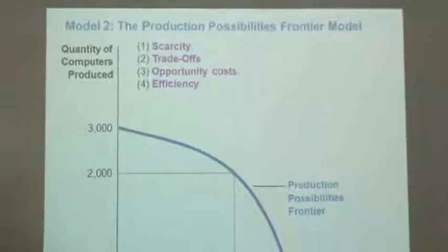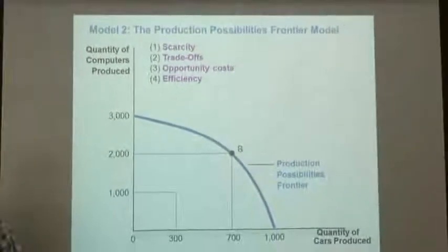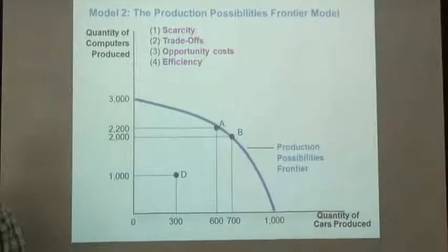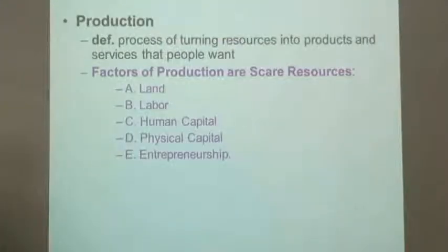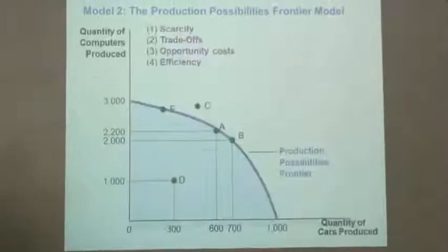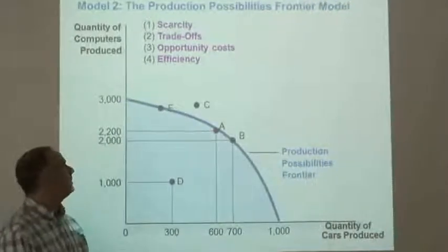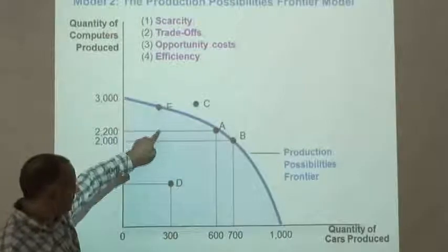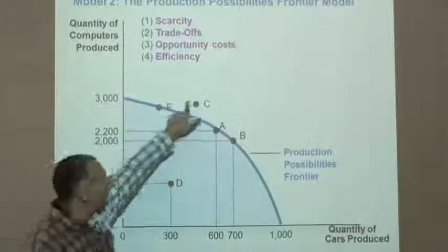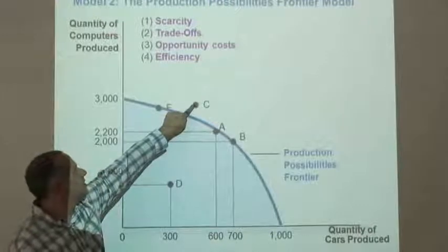So, here's our production possibilities frontier. We consider point B. What scarcity says is that there are things that we can't do, things like point C that we cannot do.